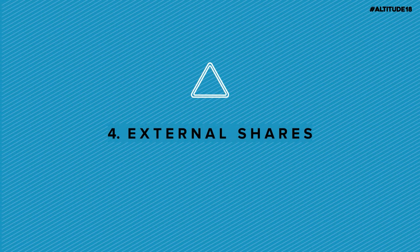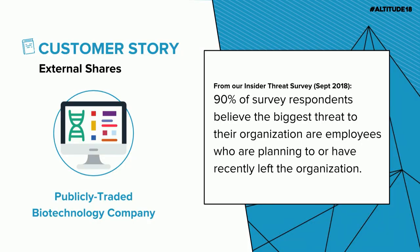The fourth big risk is external shares — related but different. We see this in a couple of forms: people sharing files with personal email addresses, or sharing with competitor domains that you'd be really concerned by. In this story, we were working with a biotech company specifically concerned about competitor sharing. We searched their first competitor domain — no hits. Second competitor domain — no hits. Third competitor domain — we found that an employee from a recently shut-down department who went to work at a direct competitor was sharing files containing incredibly proprietary information with her account at that company. The customer shut down the call and brought in their security team.